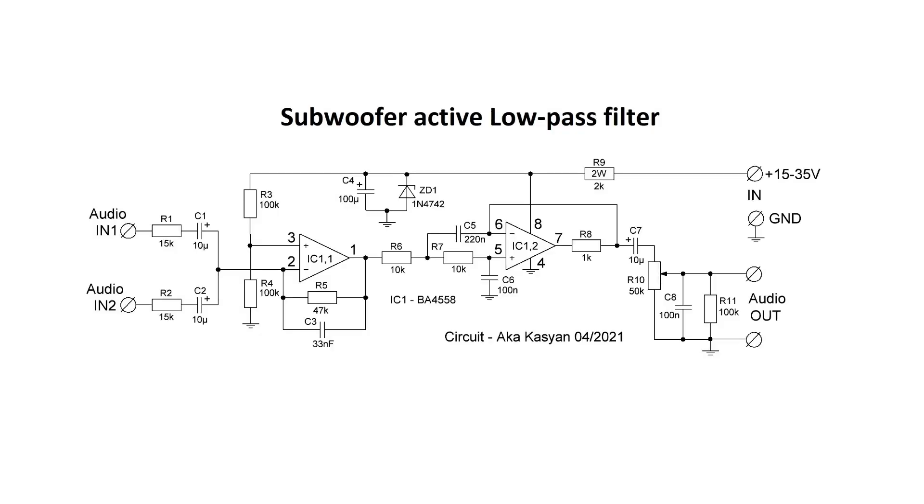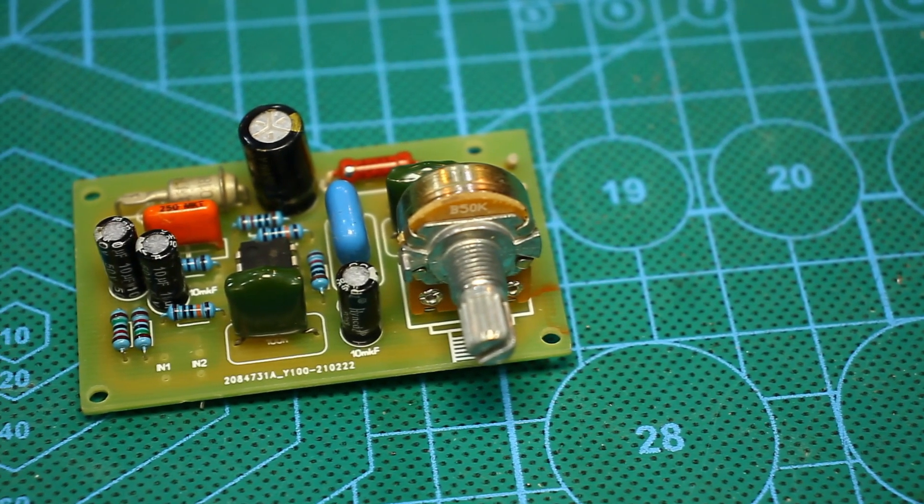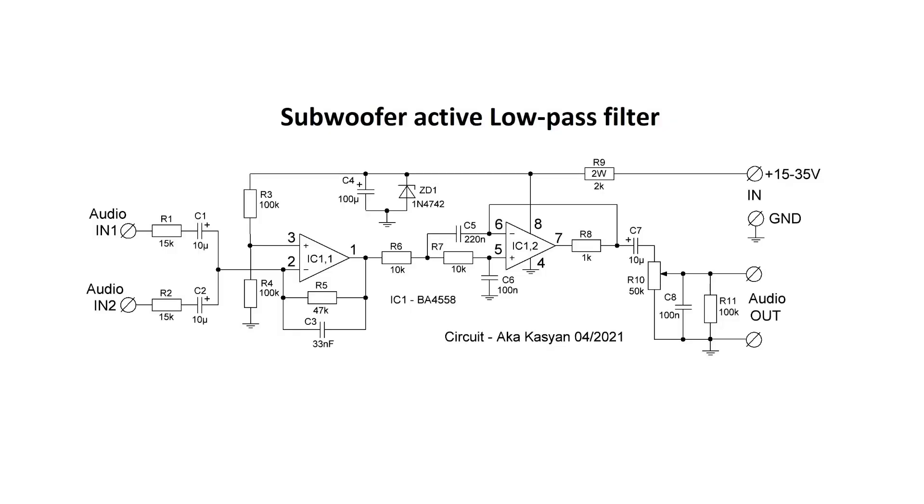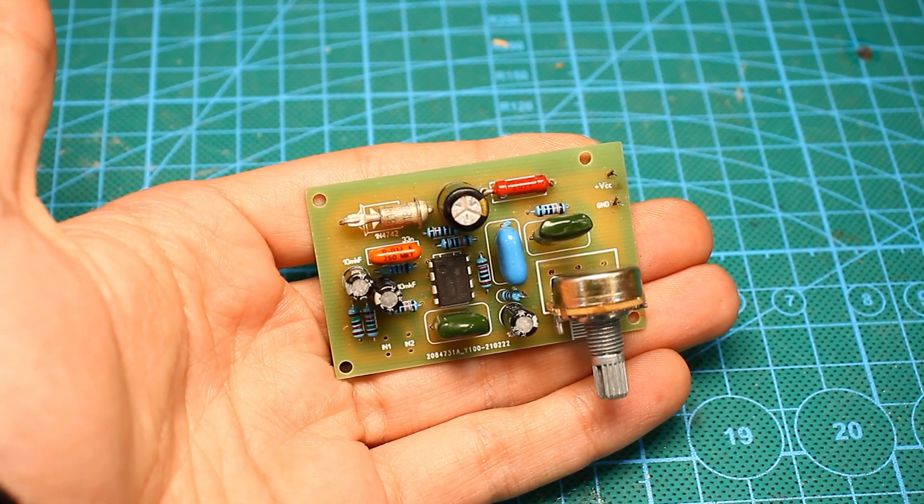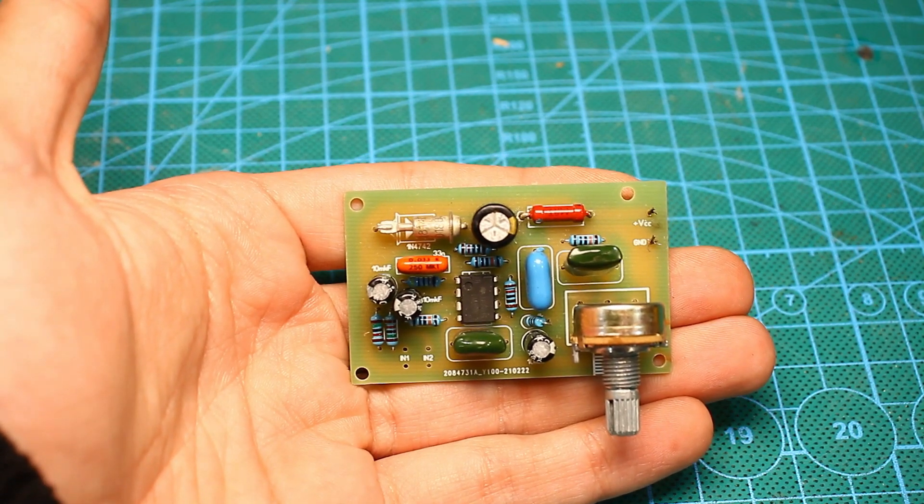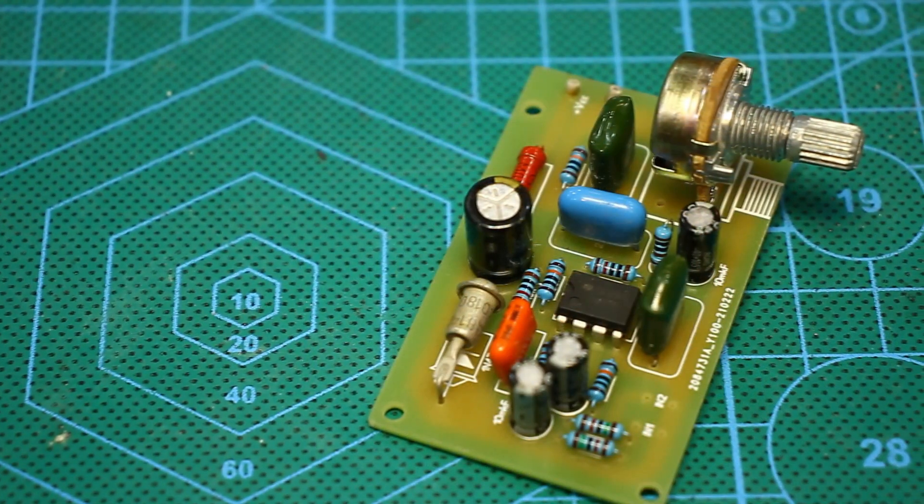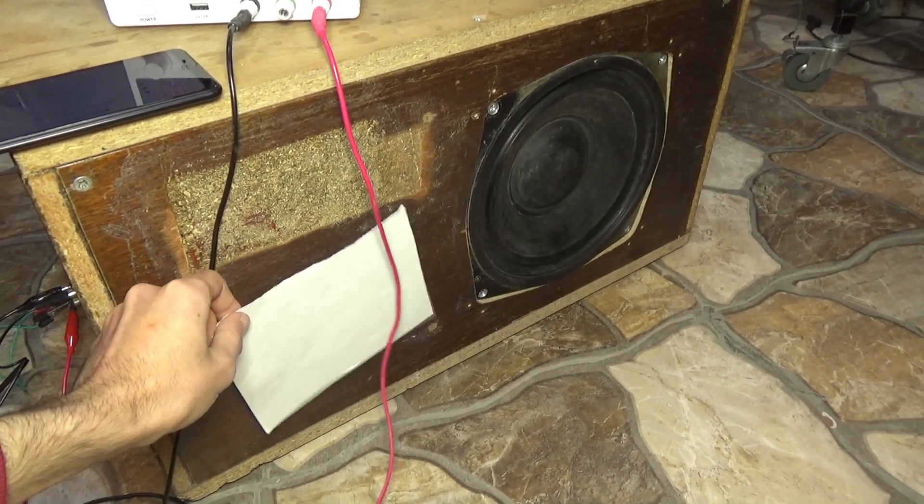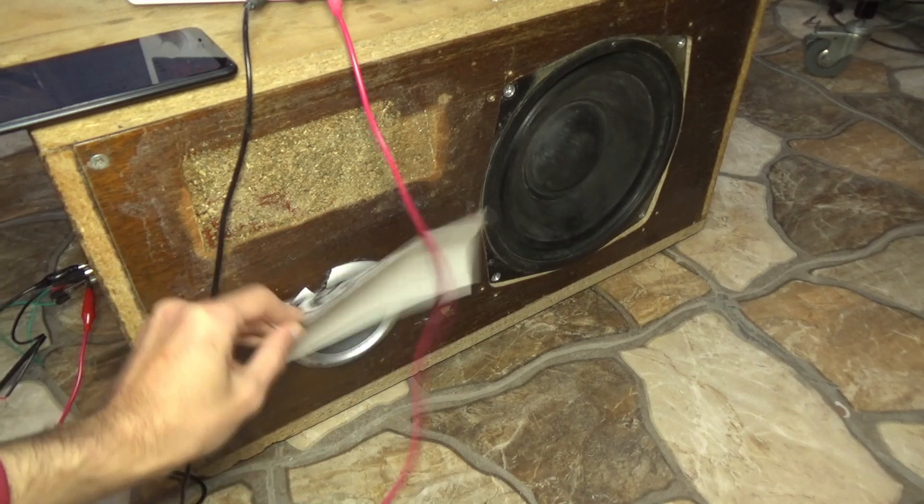The low-pass filter adder is intended for summing the signal from stereo channels into one signal and filtering unnecessary frequencies. This filter is active, built on a BA4550 dual operational amplifier microcircuit and provides a cutoff 100 Hz. That is, the filter removes all frequencies that are above 100 Hz and below 100 Hz is amplified and goes to the low-frequency amplifier input. As a result, from the sub, you only hear the low frequencies, the so-called bass.